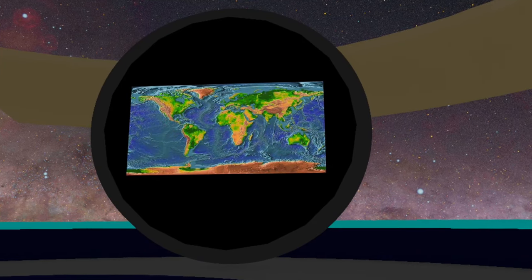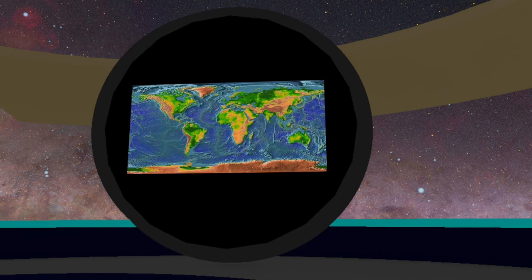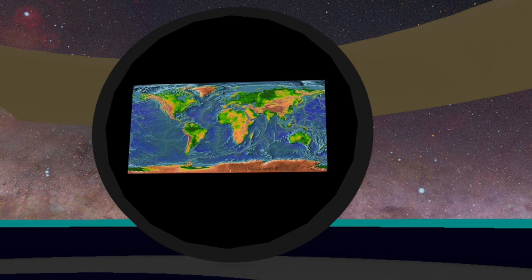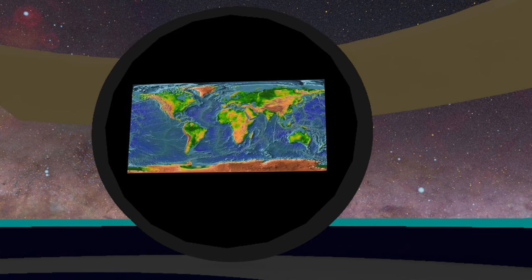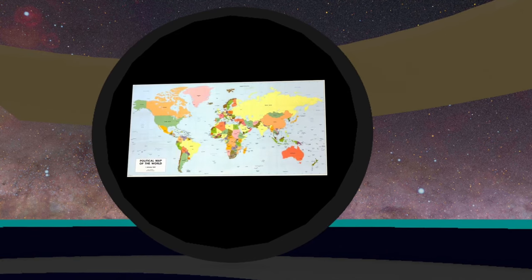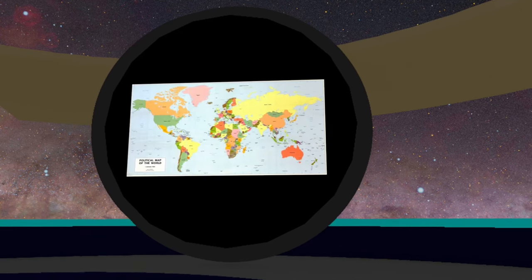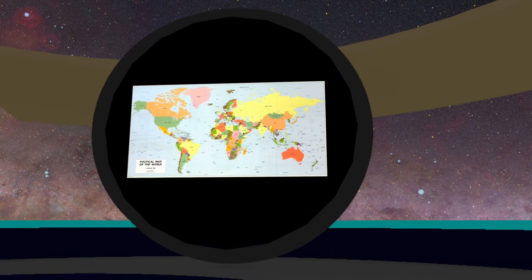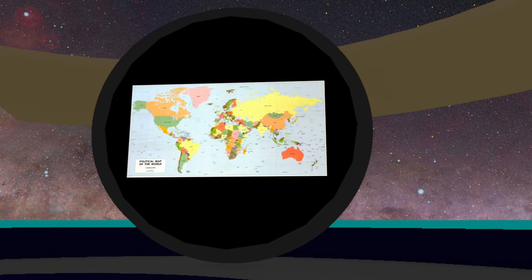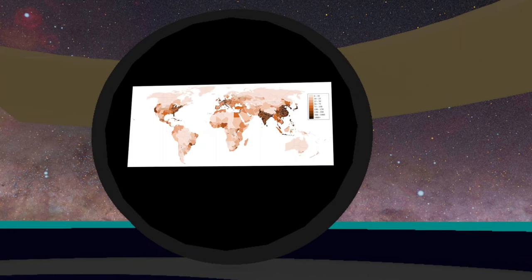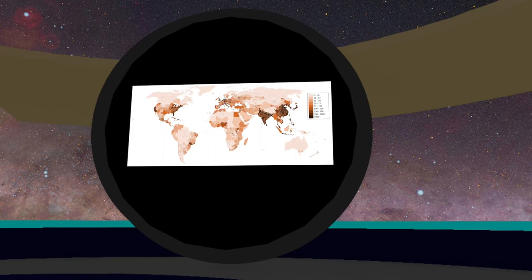For example, this image is a topographic map showing elevation. This map shows country boundaries. This map shows population distribution.